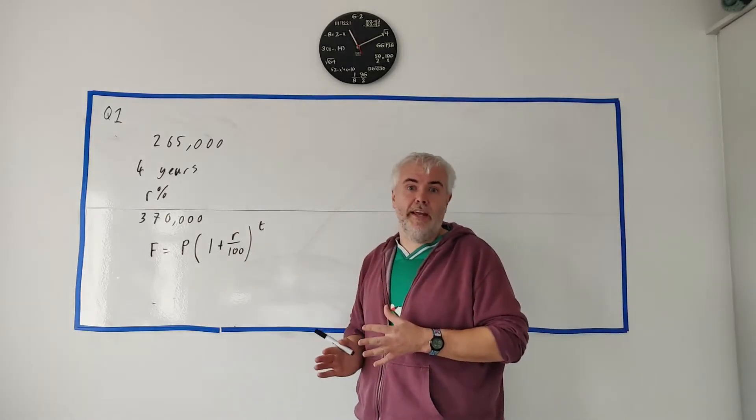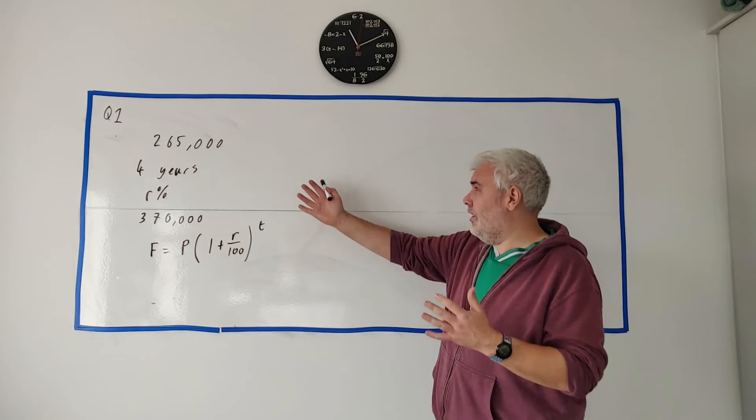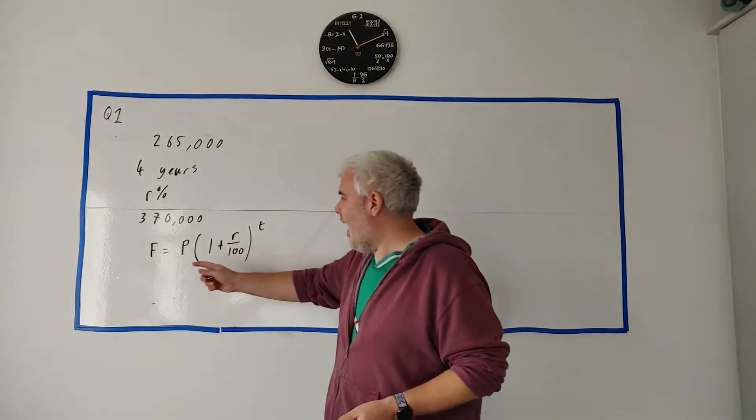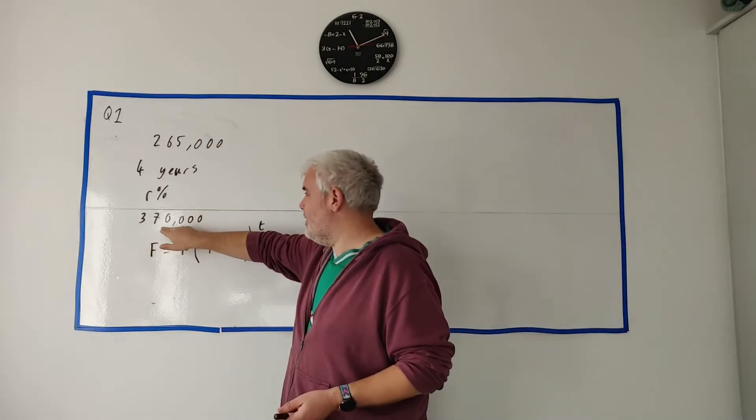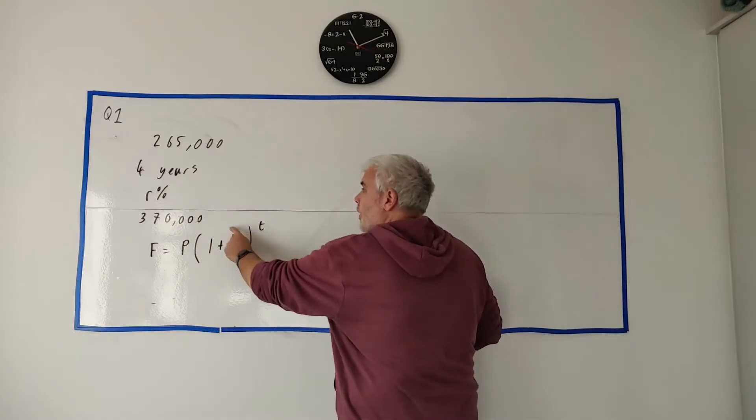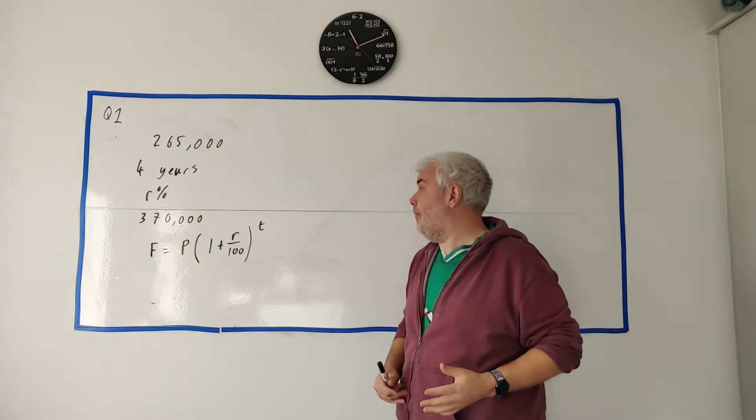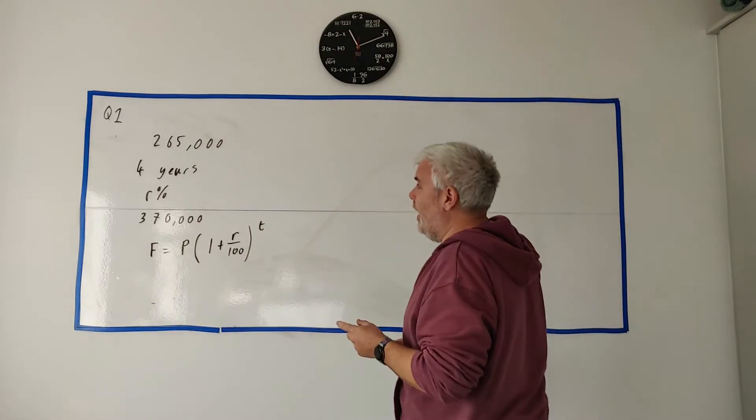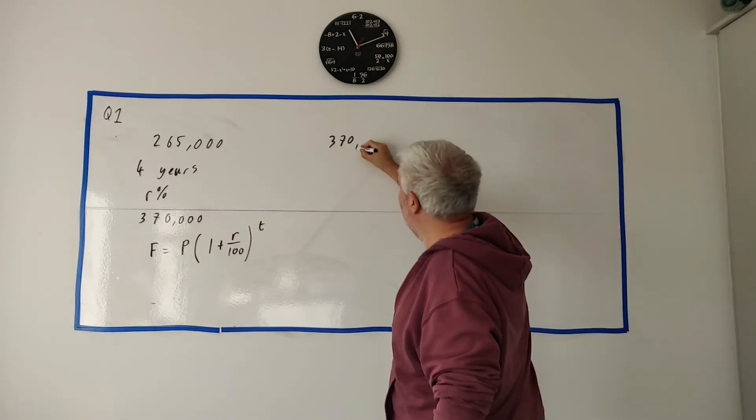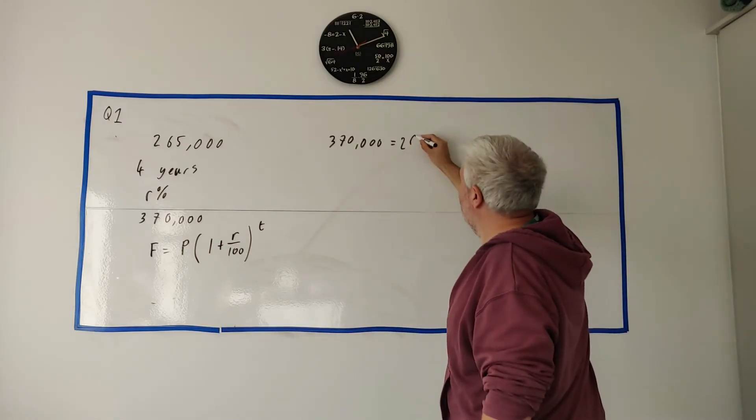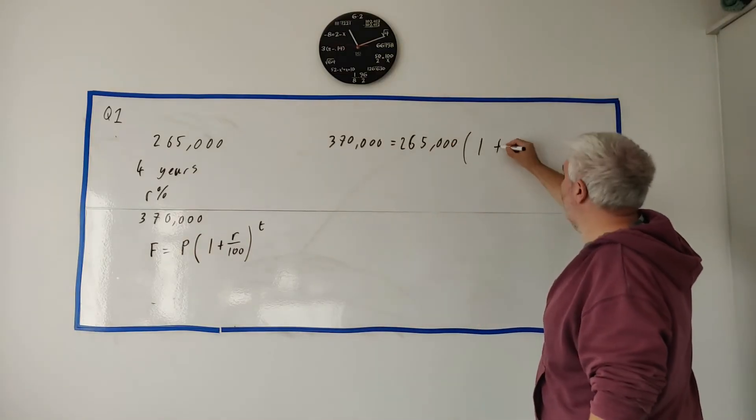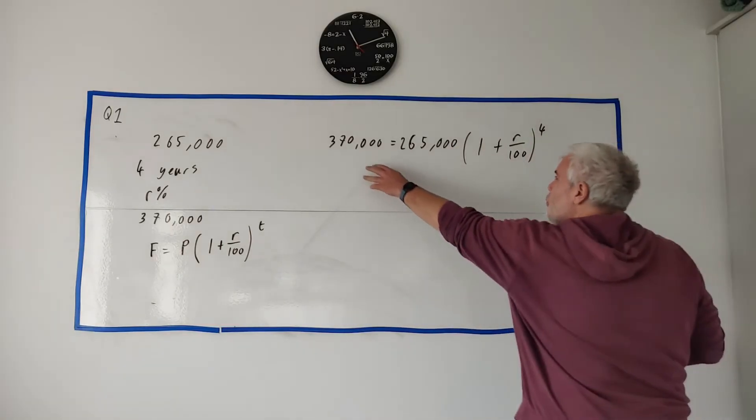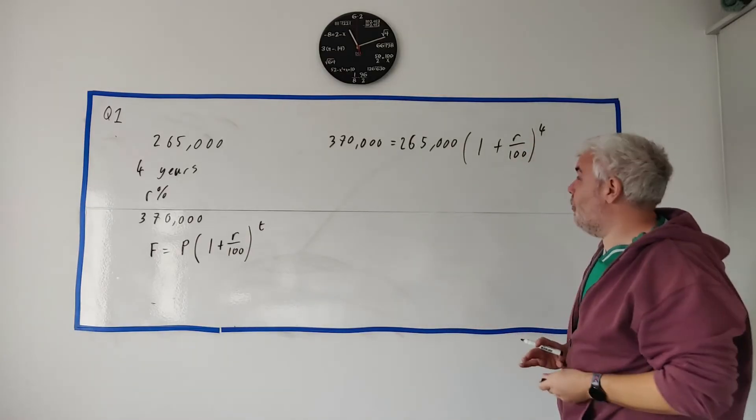I'm going to show you the slow, long way to answer this. And then I'm going to show you a quicker way. They tell us F is equal to the final price 370,000. P, the principal, is the starting price. R is the percentage we're looking for. And T is the amount of time, in this case four years. I'm going to use algebra and solve this formula. So let's fill in all the numbers we can fill in: 370,000 is equal to 265,000 multiplied by 1 plus R over 100 to the power of 4.